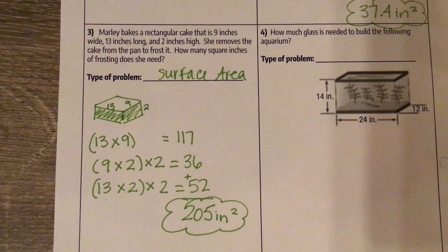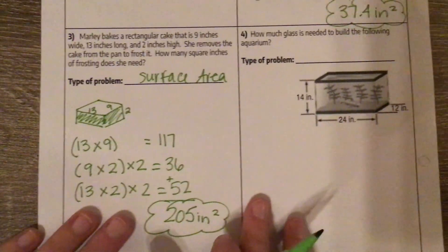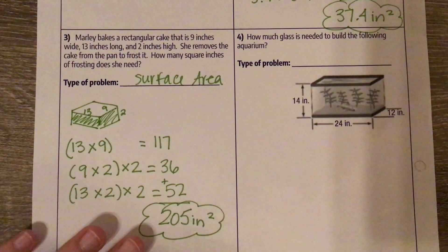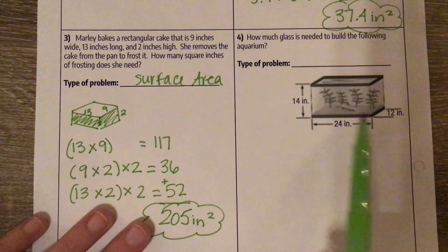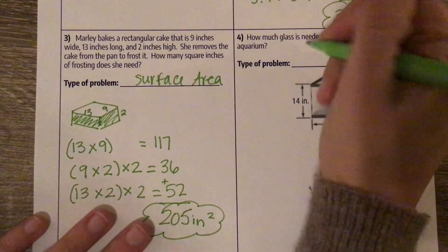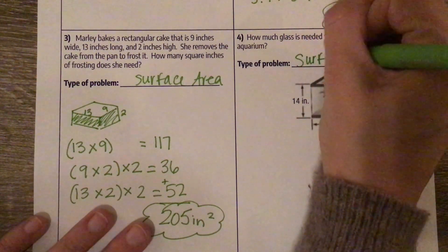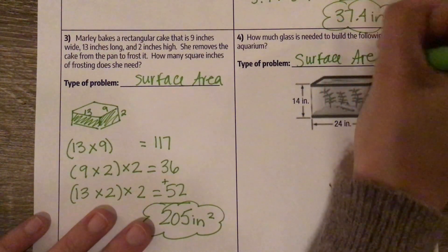Number four: how much glass is needed to build the following aquarium? So glass isn't filling up the whole thing. It's just the surface around it. So we're talking about a surface area problem.